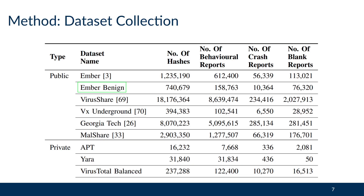In performing our analysis, there were a number of different commodity malware campaigns that make use of living off the land techniques. We used a large number of datasets in order to increase the reliability of our results and ensure they were varied. We also took special steps to make sure our datasets are reliable by removing erroneous data. We made use of various well-known commodity malware datasets such as Ember, Ember Benign, VirusShare, VX Underground, Georgia Tech, and Malshare.